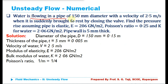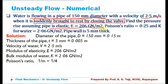Moving to the next numerical: water is flowing in a pipe of 150 mm diameter with a velocity of 2.5 meter per second and is suddenly brought to rest by closing the valve. The problem statement itself states it is suddenly closed, so no need to specify time separately. The pipe is elastic with modulus of elasticity 206 giga newton per meter square, Poisson's ratio 0.25, bulk modulus of water 2.06 giga newton per meter square, and pipe wall thickness 5 mm. Find the pressure rise in the pipe.